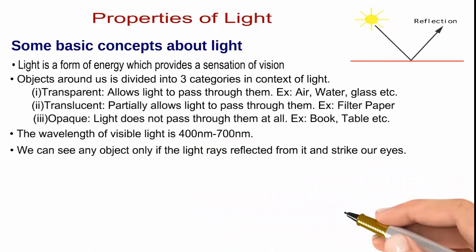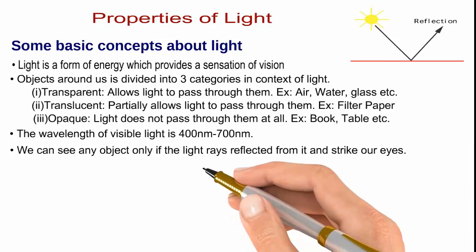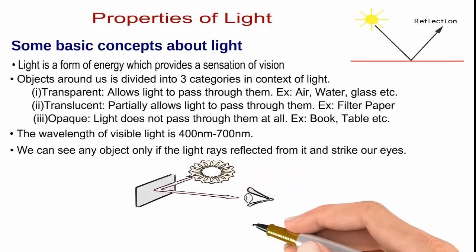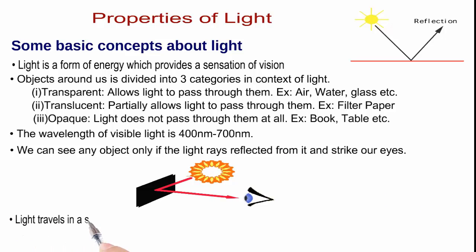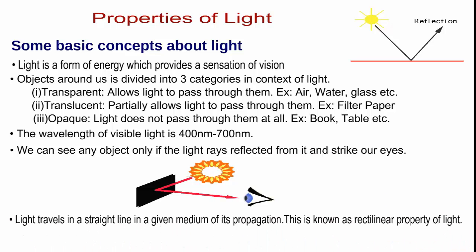Translucent partially allows light to pass through them, for example filter papers. Opaque, light does not pass through them at all, for example books, tables, etc.